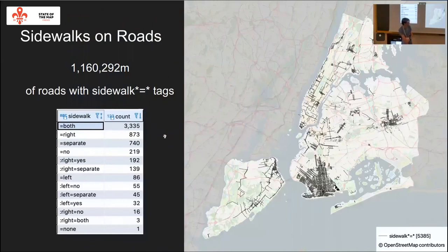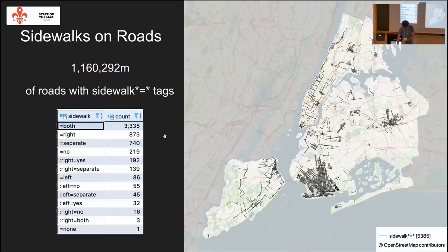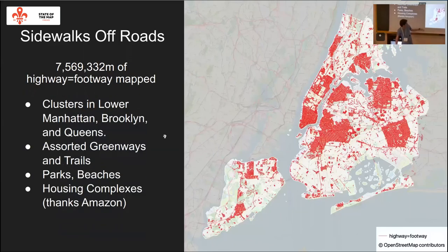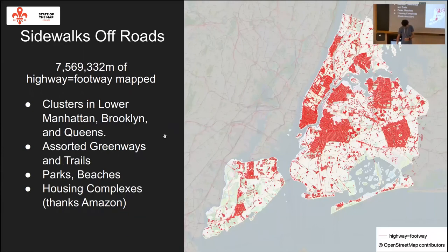People always ask me: why not just tag sidewalks on the road? Here's the current progress of sidewalks tagged on the road in New York — about a million meters, concentrated in certain areas. We mainly map them as separate ways because we want to capture curb information for intersections. You can see the separate-way sidewalks are mapped in almost the opposite areas. One challenge is that technically all roads with separate sidewalks should also have a tag 'sidewalk=separate', and we haven't gotten there yet.